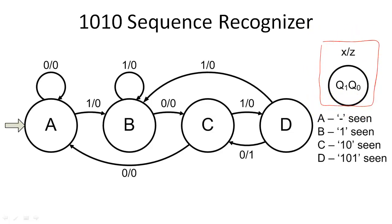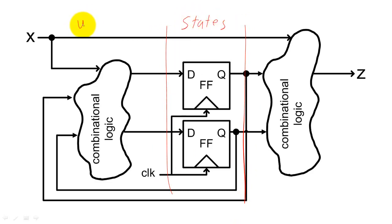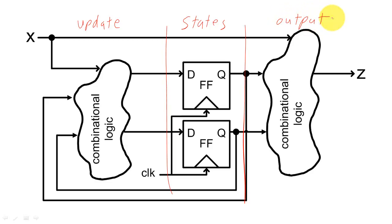Since we have 4 states, we will need 2 flip-flops to encode our states with bits. We will also need combinational logic that determines how our states will transition, and we will need a combinational logic circuit that outputs when we have found the desired input sequence.